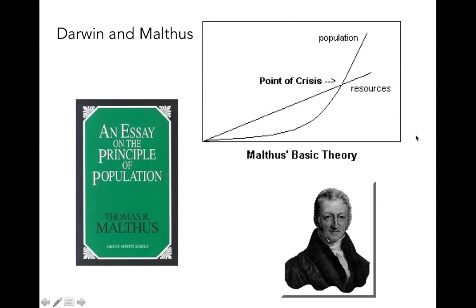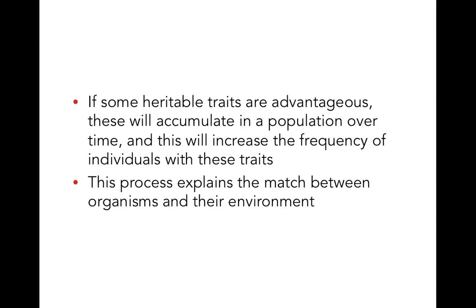Malthus was talking about human populations, but Darwin said if this was so for human populations, certainly you could apply this to natural populations as well. He concluded that if some heritable traits are advantageous, they're going to accumulate in a population, and generation through generation, you're going to get a match between organisms and their environment.